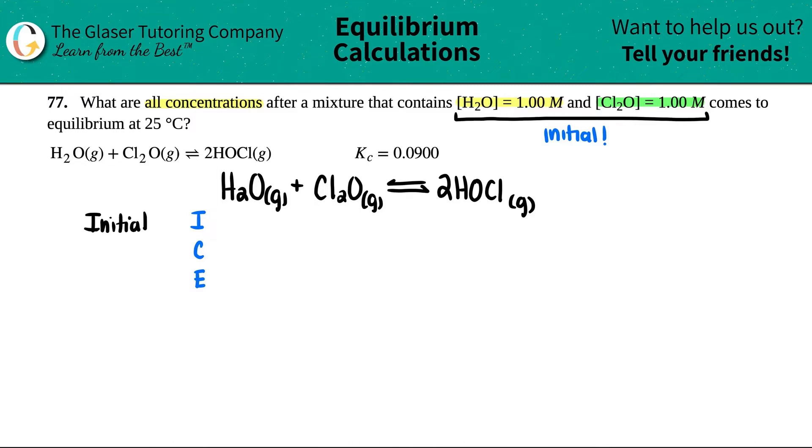The I in ICE stands for initial - all your initial concentrations. They gave me Kc, so C stands for concentration. These brackets mean molarity or concentration. They gave me capital M, so we're all good with units. H2O is 1.00 - I don't like to put units in my ICE table, I just double-check I'm in the right units. Cl2O was also 1.00 molarity.